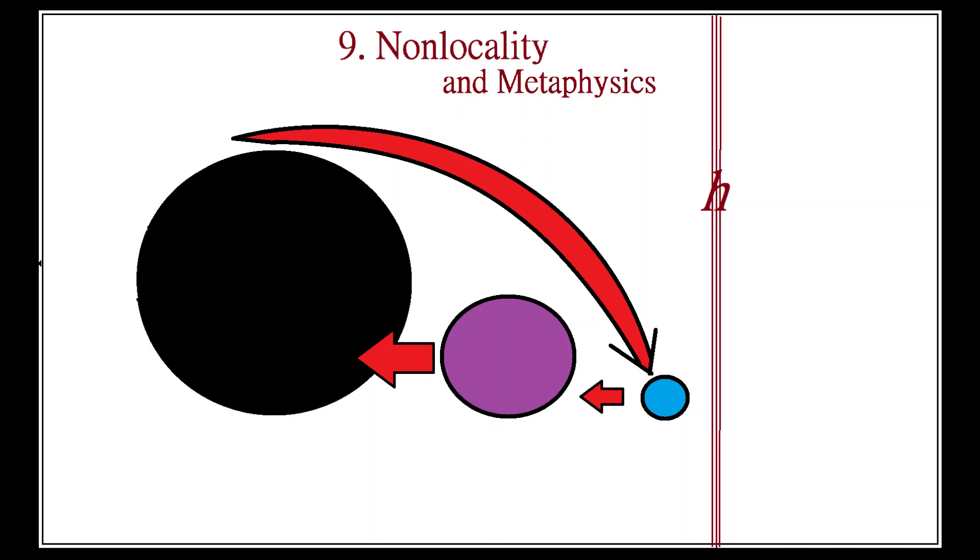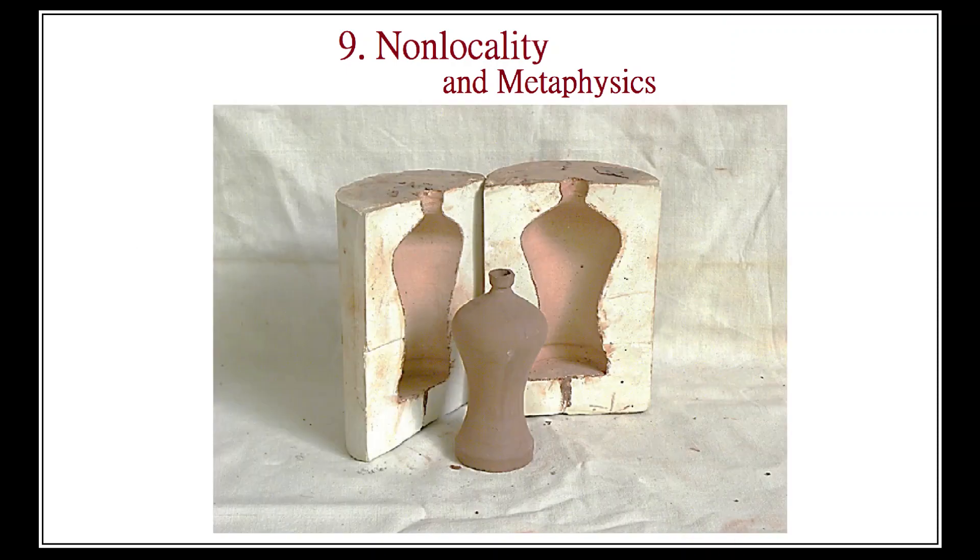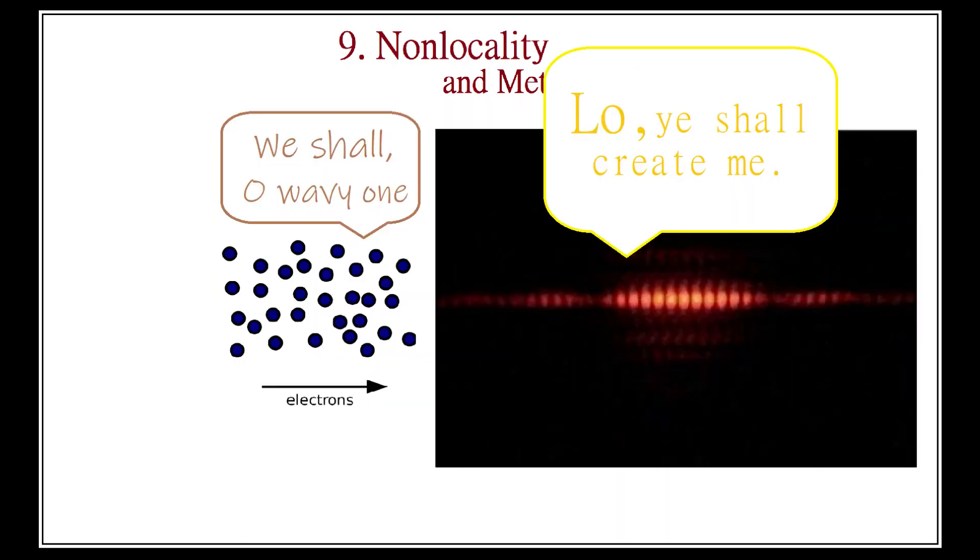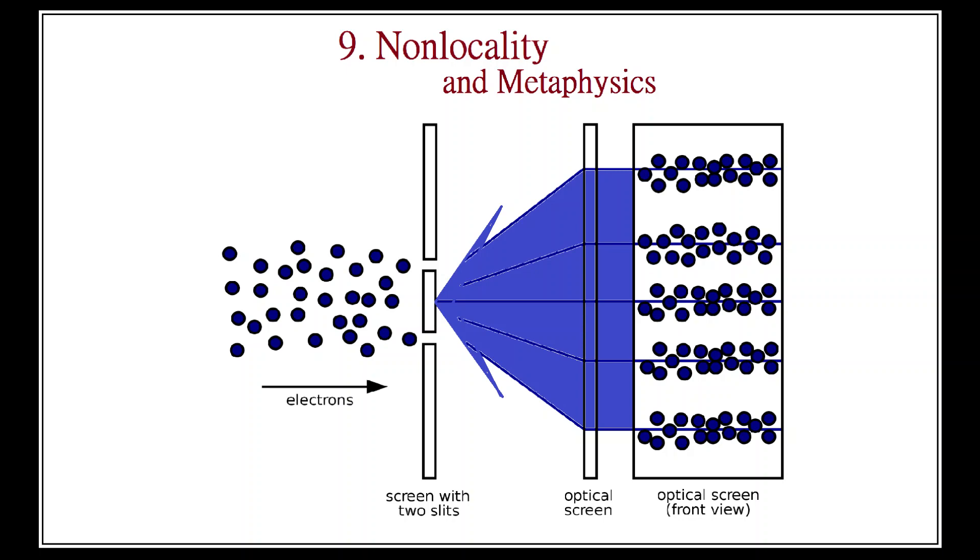Therefore, we must conclude that there is top-down causation instead. That is to say, the emergent waveform is somehow independent of its constituent parts. The wave creates itself, in a sense, by influencing the particles in a non-local way. Wholes are more than just the sum of their parts. They are metaphysically independent entities that assert their own right to exist.